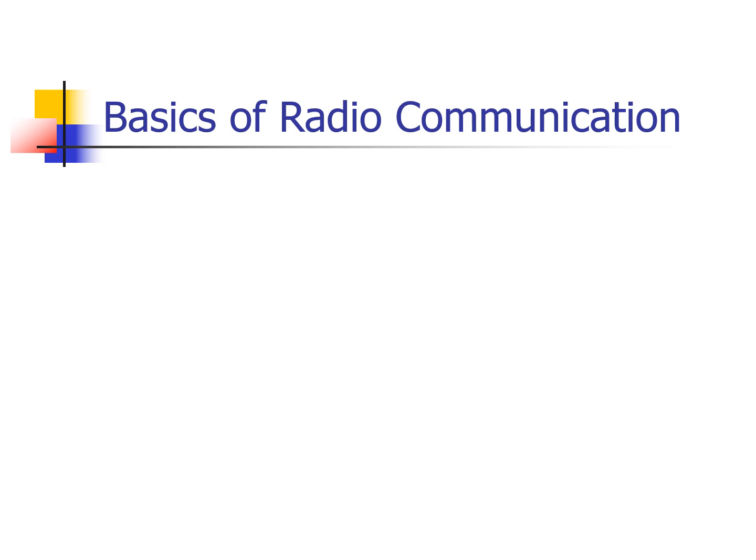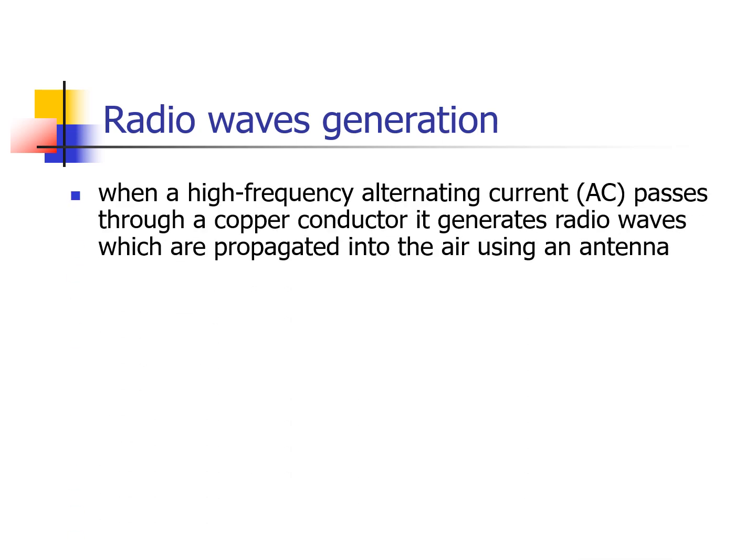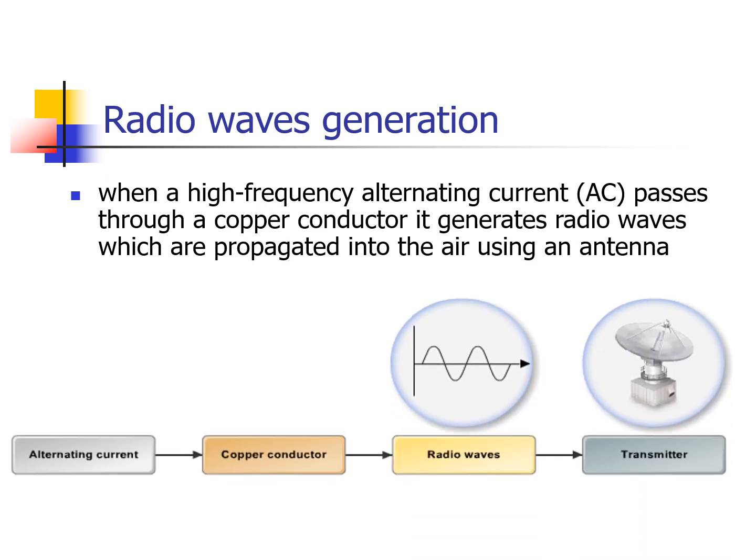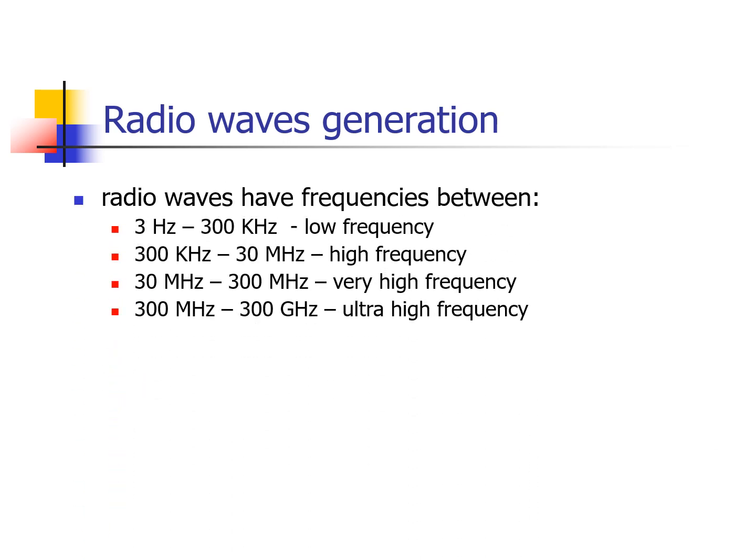Let us discuss the basics of radio communication. How are radio waves generated? When a high-frequency alternating current passes through a conductor, a copper conductor, it generates radio waves, which are propagated into the air using an antenna. This process is demonstrated by the given figure.